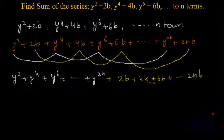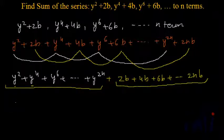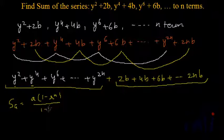We have actually divided this pattern into two patterns, and the sum of all terms can be written as the sum of these two patterns — first this geometrical progression, and second this arithmetical progression. For the geometrical progression, the first term is y squared and the common ratio is also y squared. The sum of a GP is written as a multiplied by 1 minus r to the power n, divided by 1 minus r.